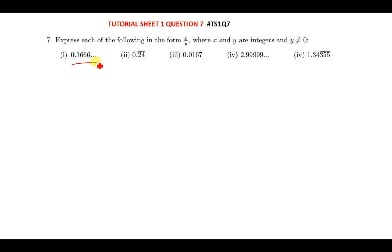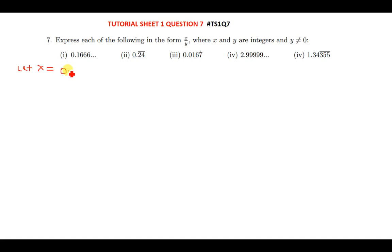What we're going to do is exactly what you're supposed to do when faced with such questions. The first thing you need to do is equate the decimal to a variable. I'm going to use x. So let x be equal to 0.1666..., where the sixes are repeating, going on like that.